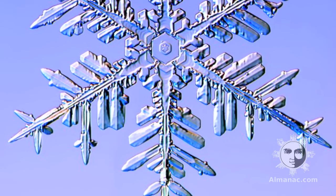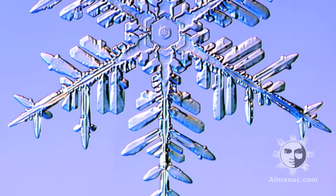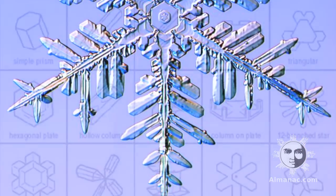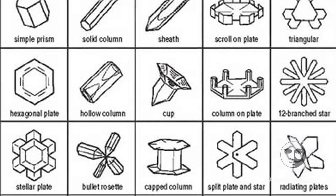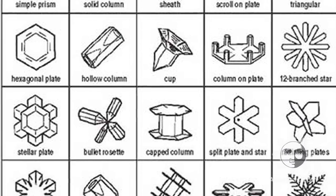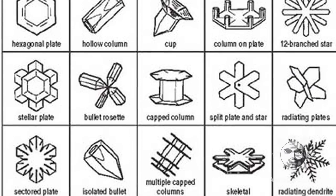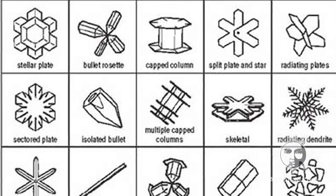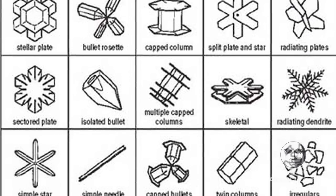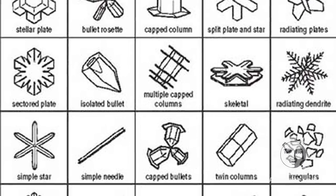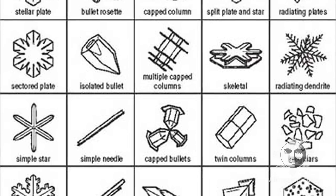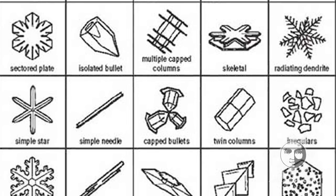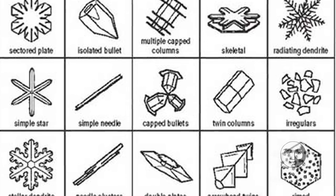A single snow crystal consists of something like one quintillion molecules of water. The number of ways that many molecules can be arranged into six-sided crystals is astronomical. So the odds are that no two snowflakes will be exactly alike.